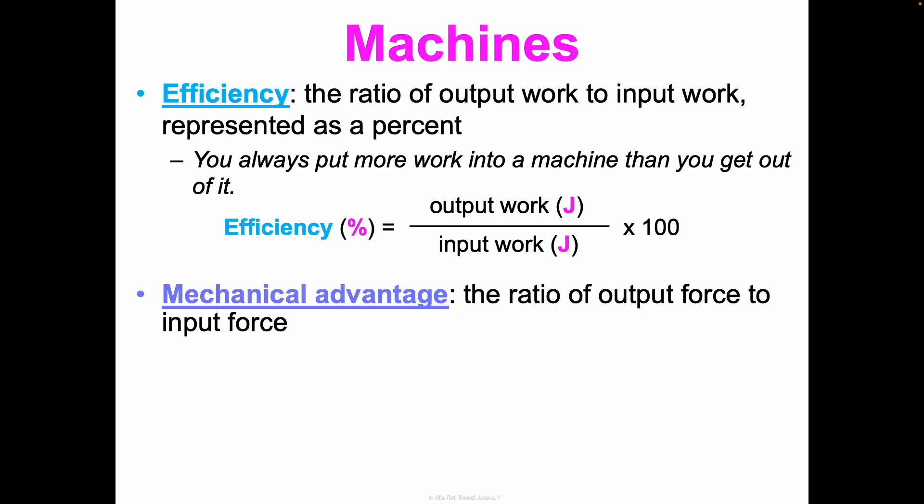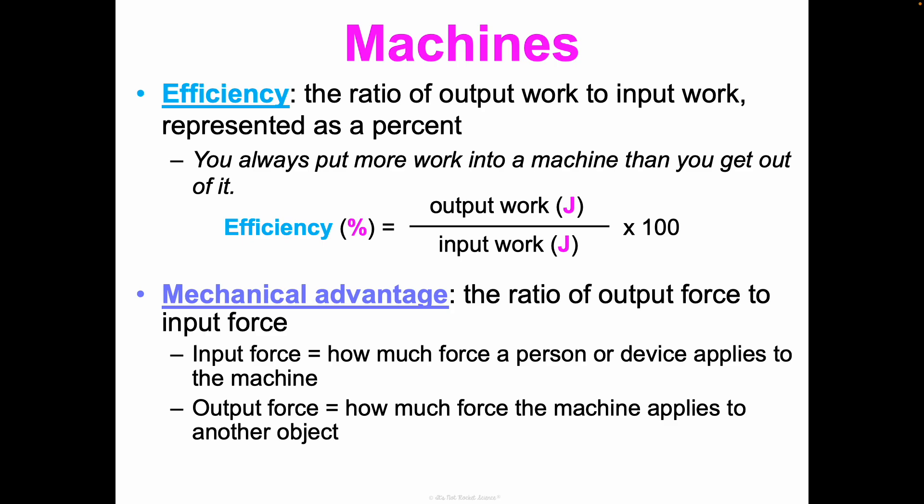All right. Now let's talk about mechanical advantage. Mechanical advantage is the ratio of output force to input force. So the input force is how much force a person or device is applying to the machine. And then the output is how much the machine then is going to apply to another object. And so we calculate this as output divided by input. So for example, if you put in 200 newtons of force and the machine then can put out 1,000 newtons of force, then the mechanical advantage, the effectiveness of the machine is five times more effective than what you could do without the machine.